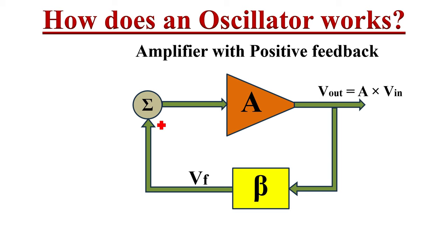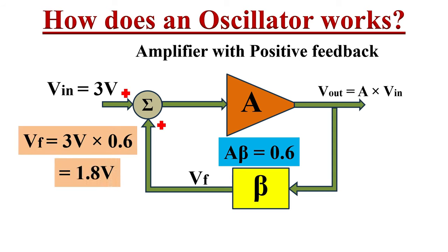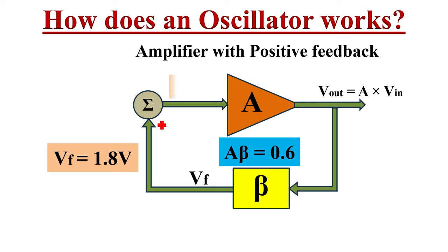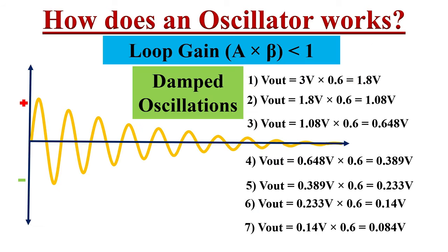For example, if A·beta equals 0.6 and the input voltage Vin equals 3 volts, then whenever this input signal passes through the amplifier and the feedback circuit, the feedback signal Vf will become 3 volts multiplied by 0.6, which equals 1.8 volts. Once we remove the input voltage, this feedback Vf of 1.8 volts becomes the new input. Each time the signal passes through the loop, the amplitude is reduced by the factor 0.6. So every time the signal passes through the loop, the amplitude decreases, and after a particular time period, the oscillations in the circuit will die out.